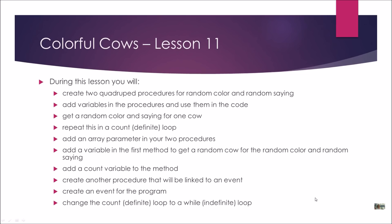We're going to do all of those things in this lesson. You're going to create two QuadraPrep procedures — one for getting a random color and one for getting a random saying. We've been picking random items from an array successfully, but now we're going further with randomness to get random colors and random sayings using variables. We're going to get a random color and saying for one cow, then repeat this in a count loop, add an array parameter, add a variable for a random cow, and add a count variable.